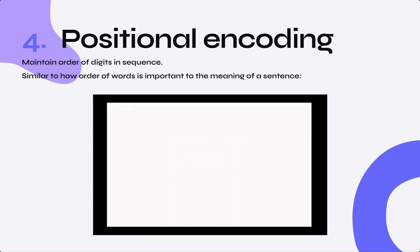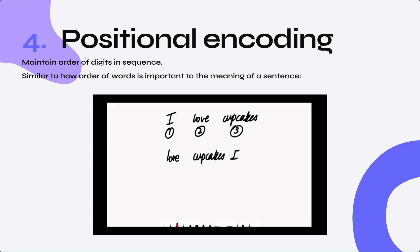The fourth step is positional encoding. This involves maintaining the order of digits in a sequence, similar to how the order of words is important to the meaning of a sentence. Take our previous example, 'I love cupcakes.' 'I' is given position one, 'love' is given position two, and 'cupcakes' is given position three. Changing the positions of these words removes the meaning of the sentence. The same can be said for the order of digits in a sequence.